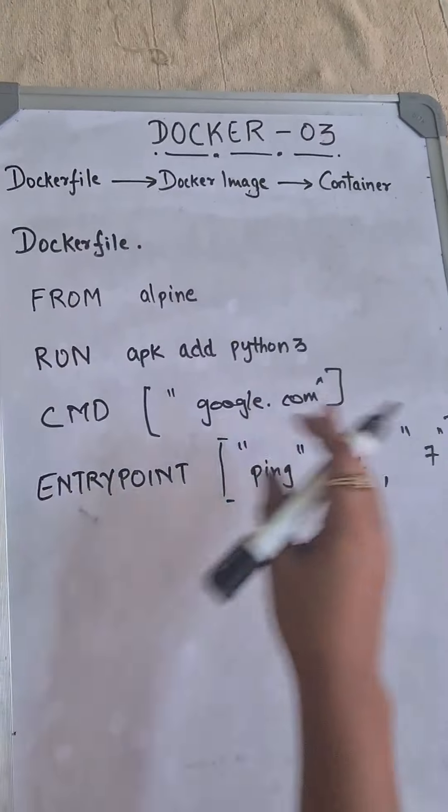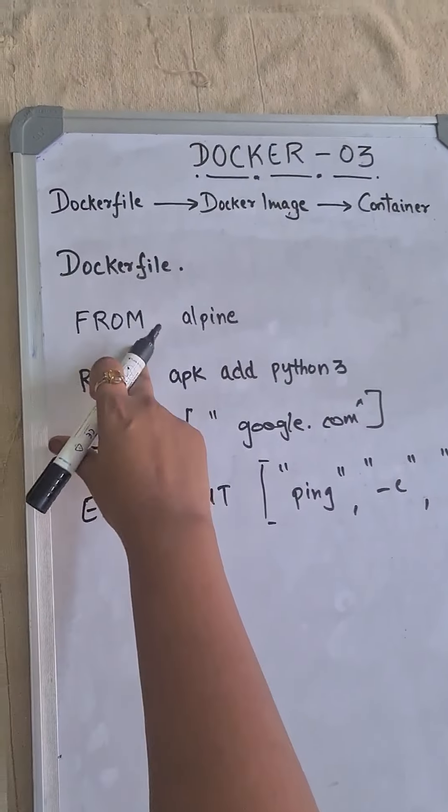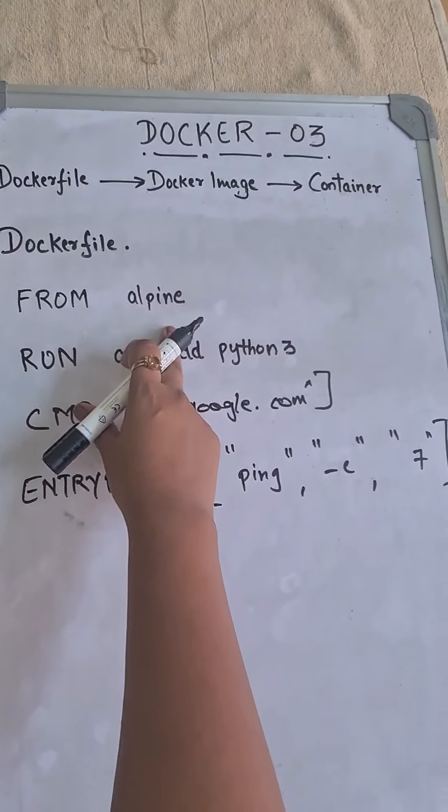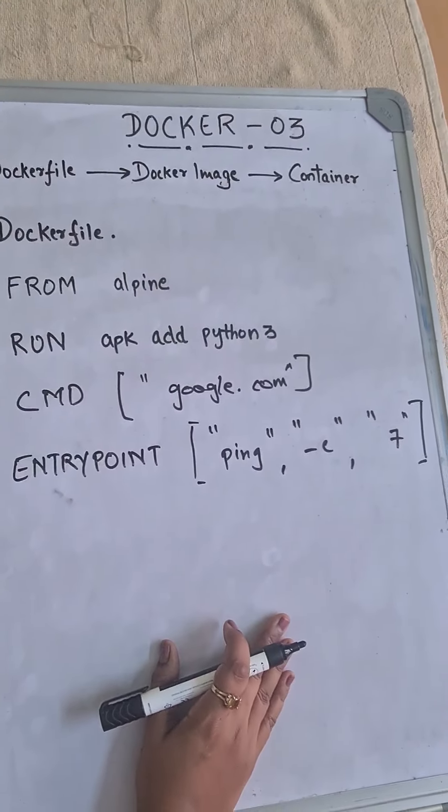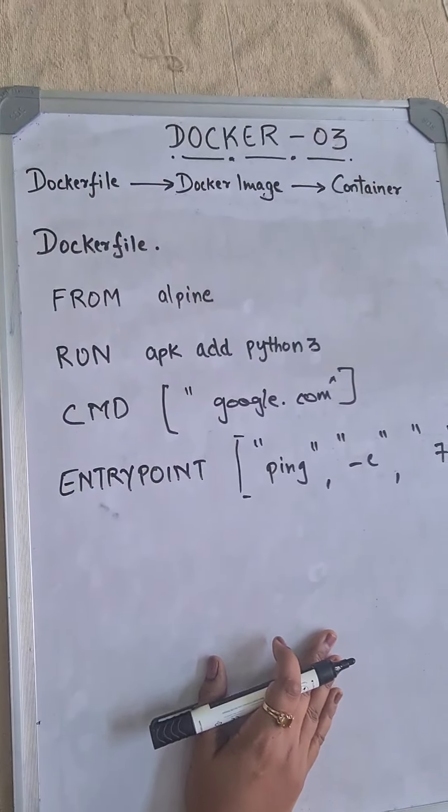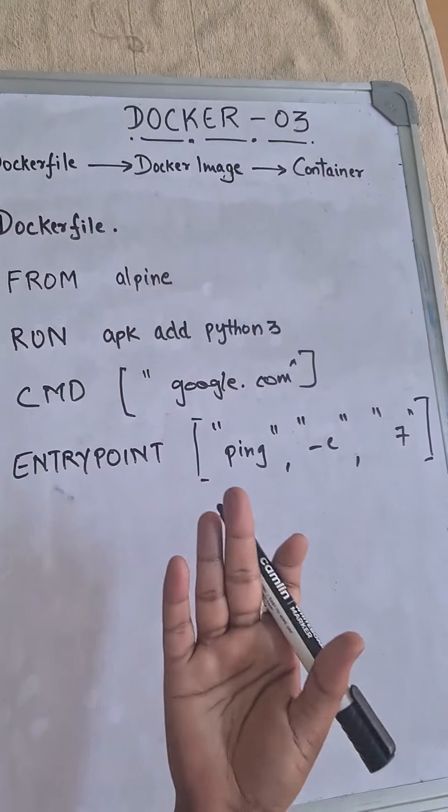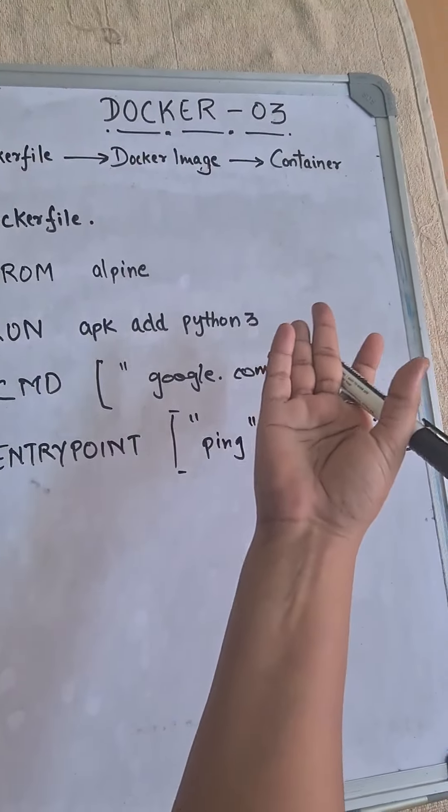So let's understand once more the entire Dockerfile. FROM is actually indicating the base image Alpine, where it is using the latest version of Alpine. Second, we have RUN. So when we build the image, we will be installing Python with the version of 3.